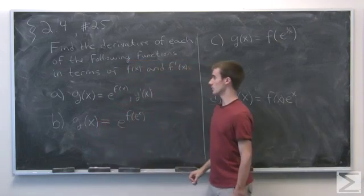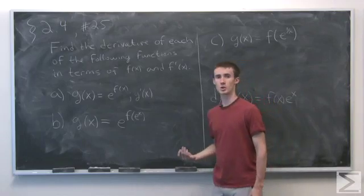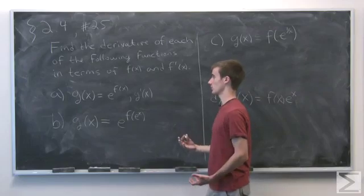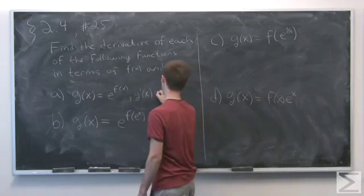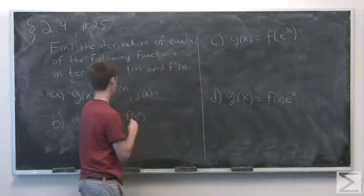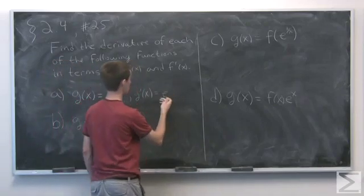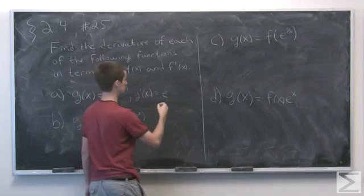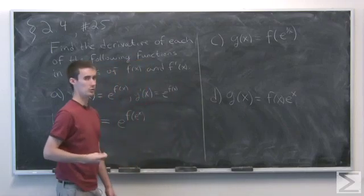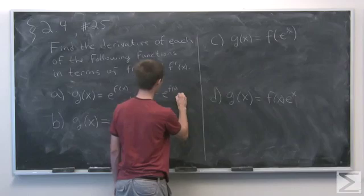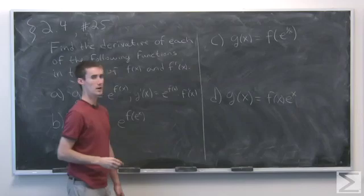So our first function is g of x equals e to the f of x. Now this is going to be a chain rule problem. This is the exponential function applied to f of x. So we first take the derivative of the outside. So we have e and evaluate it at the inside function, so e of f of x, and then multiply it by the derivative of the inside function, so f prime of x.